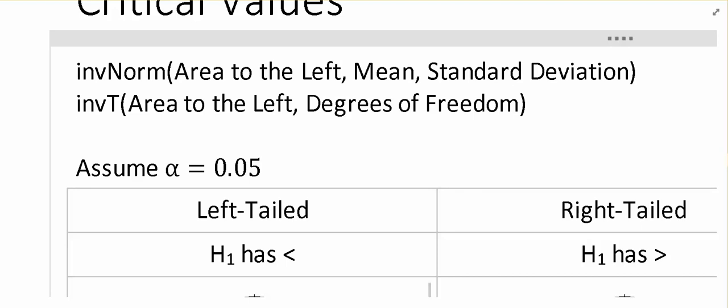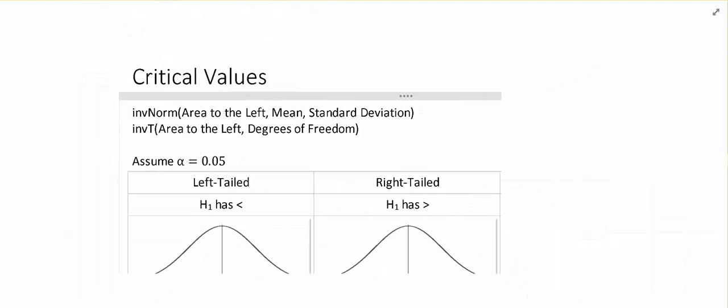Now for inverse norm, we then want to input the mean and standard deviation. When it comes to inverse t, we input the degrees of freedom. But in both cases, it amounts to finding the area to the left of the point we're looking for. And so when it comes to finding the critical value, my suggestion to you is going to be to draw a picture of what's going on with your test.